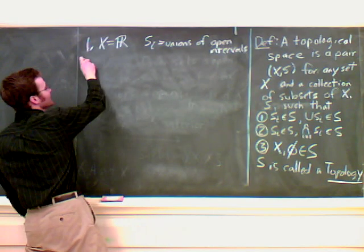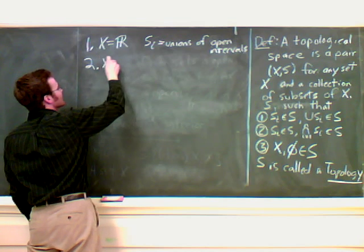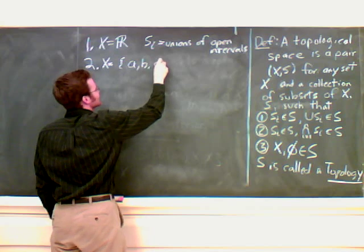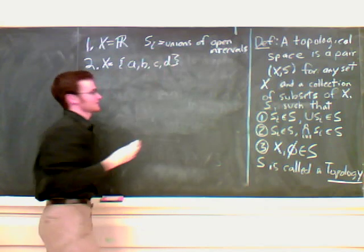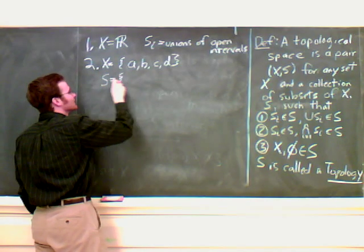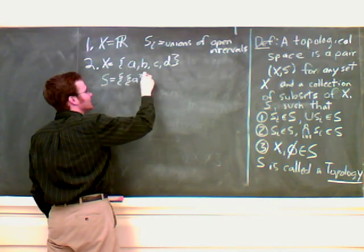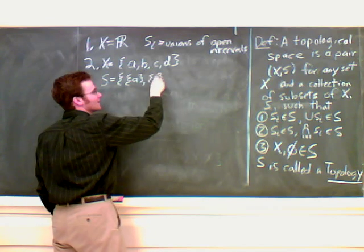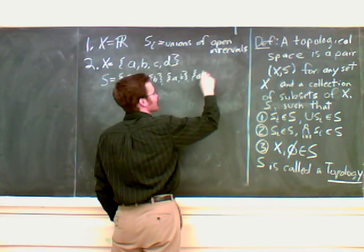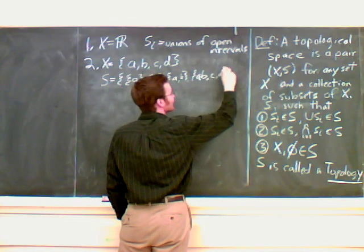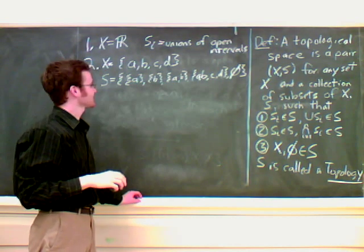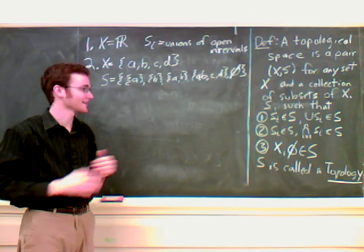The second example, completely different. Here, we say X is the set {A, B, C, D}, just four elements, whatever they may be. And here, we say S is the set {A}, the set {B}, the set {A, B}, the set {A, B, C, D}, and of course the empty set. Let's see if this S is a topology on X.